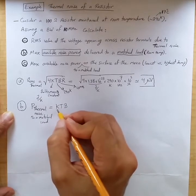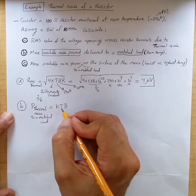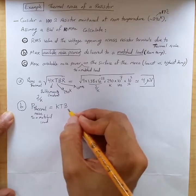K, again, Boltzmann constant. T is room temperature or the given temperature in degrees Kelvin, and B is the bandwidth.